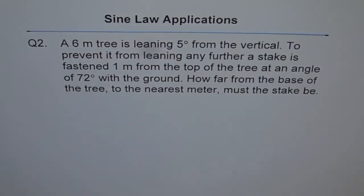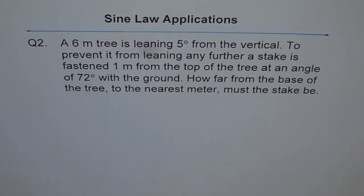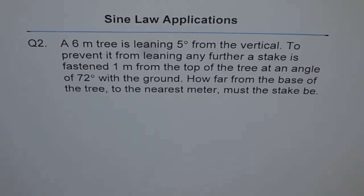This is an applications question. A six meter tree is leaning five degrees from the vertical. To prevent it from leaning any further, a stake is fastened one meter from the top of the tree at an angle of 72 degrees with the ground. How far from the base of the tree to the nearest meter must the stake be?